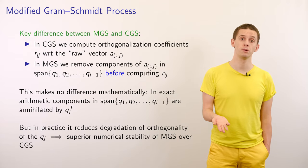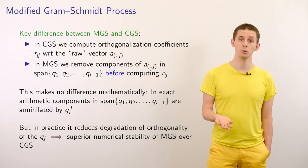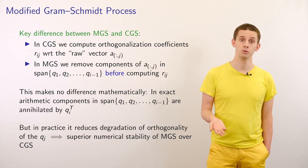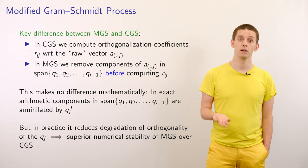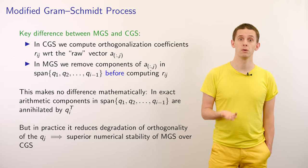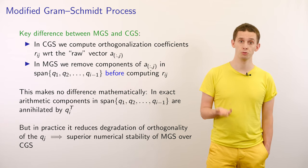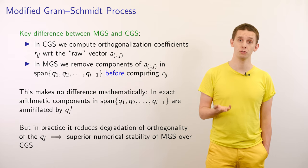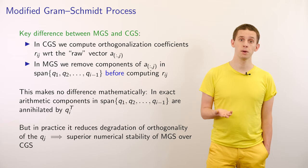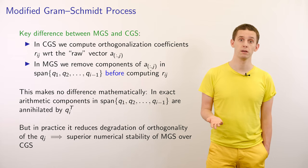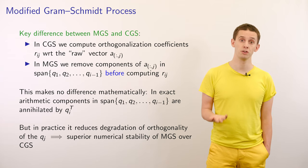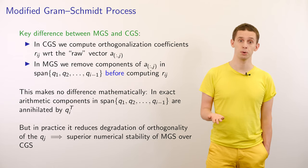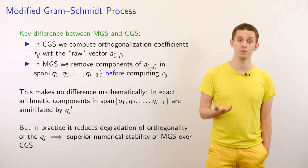The key difference between modified and classical Gram-Schmidt: in classical Gram-Schmidt, orthogonalization coefficients rij are computed with respect to the raw original jth column of A. In modified Gram-Schmidt, when computing rij, we first remove from the jth column the components with respect to q1 through qi-1. Mathematically this makes no difference in exact arithmetic, but in finite precision arithmetic the modified approach reduces the degradation of orthogonality of the q vectors, resulting in superior numerical stability.